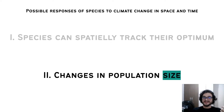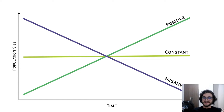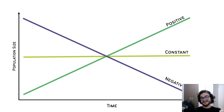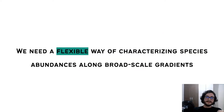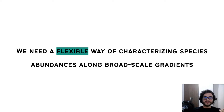We can also see changes in population sizes. A few species can be benefited from these changes and have positive population size trends, especially if their competitors are becoming less evident in some regions. Other species can have negative population trends because they are exposed to new pathogens and other density-dependent factors. So the first thing we need is a proper way of characterizing species' abundances along broad-scale gradients.